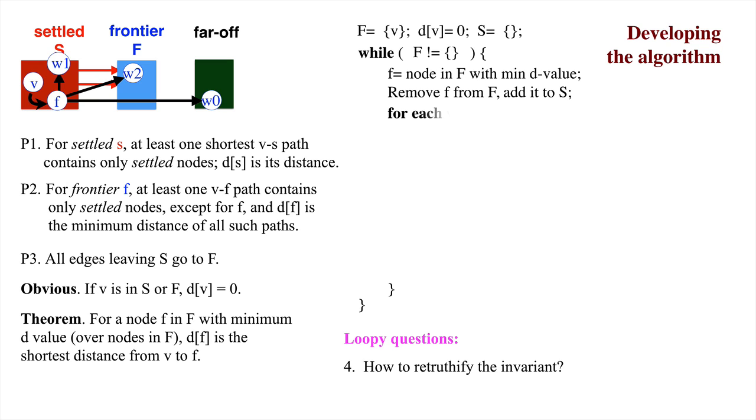We use a loop that processes all edges leaving f. That is, all edges f comma w for some node w. There are two cases to consider.